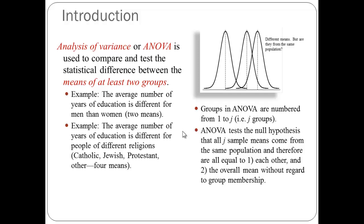For example, we could be examining the average number of years of education and trying to determine if there's a statistically significant difference across different religious groups. In the General Social Survey, for example, we can easily measure Catholic, Jewish, Protestant, and other. We would have four different means.